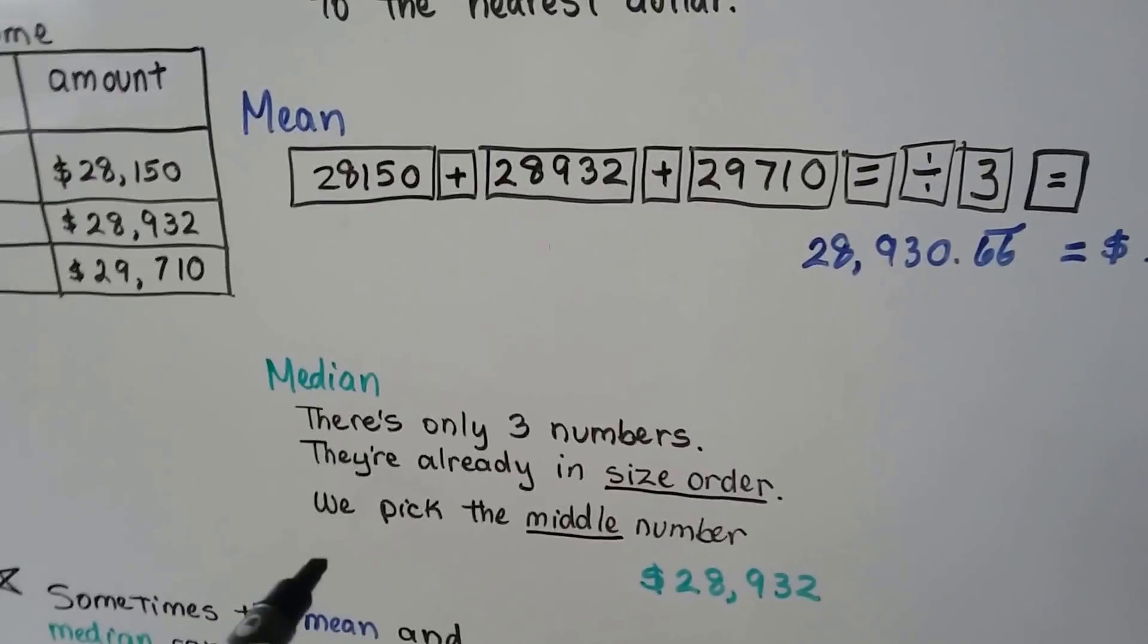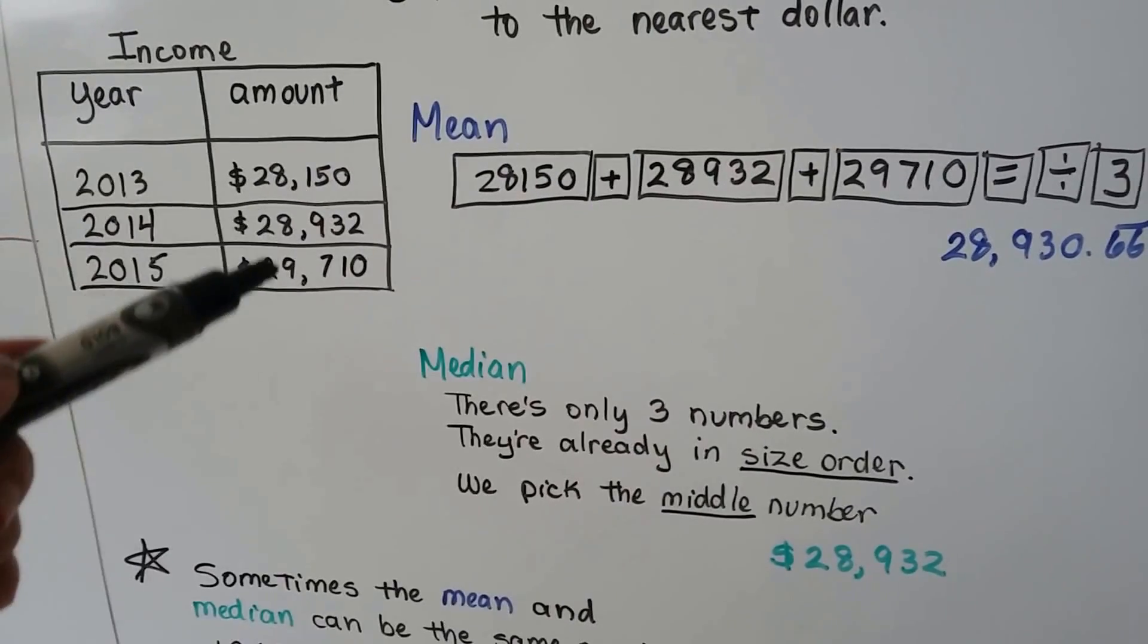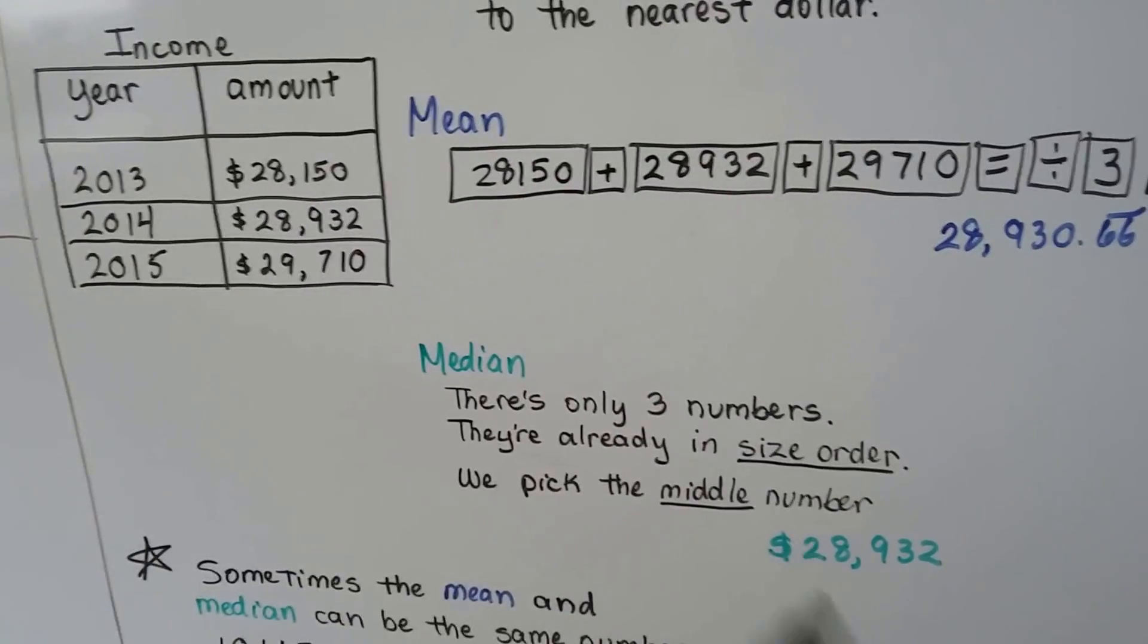For the median, there's only three numbers, and they're already in size order. This is the smallest, that's the middle, that's the greatest. So we just pick that middle number.